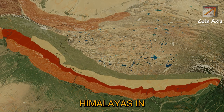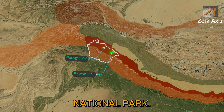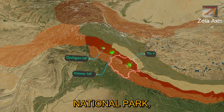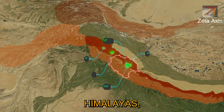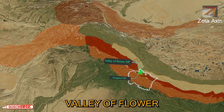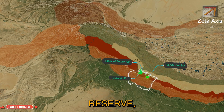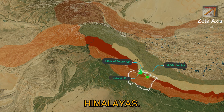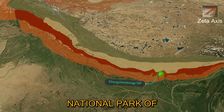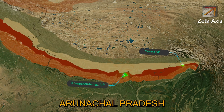In the Jammu and Kashmir Union Territory region of Greater Himalayas we find Dachigam National Park and Kishtwar National Park. Pin Valley National Park, Khirganga National Park, and Great Himalayan National Park are present in the Himachal Pradesh region. Gangotri National Park, Valley of Flowers National Park, and Nanda Devi National Park are located in Uttarakhand. Kanchenjunga National Park of Sikkim and Mouling National Park in Arunachal Pradesh are also located in Greater Himalayas.